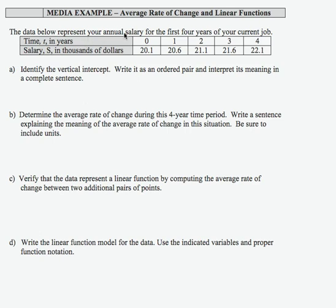Here I'm given data that represent my annual salary for the first four years of my current job. I'm going to notice that the inputs are time in years and that they increment by one. I'm also going to notice that the output is S in thousands of dollars. So the first thing I'm going to do is take a minute and actually write out what these numbers are so that we don't have to do conversions when we do our work for the problem. So I just multiplied each of the values in the output row by a thousand and that gives us the actual numbers that we're working with.